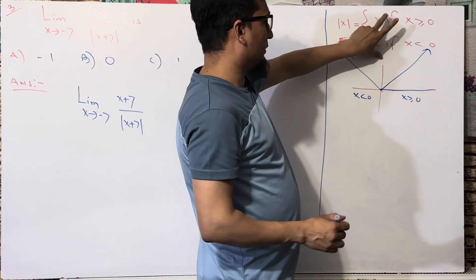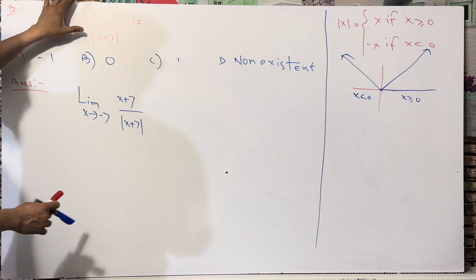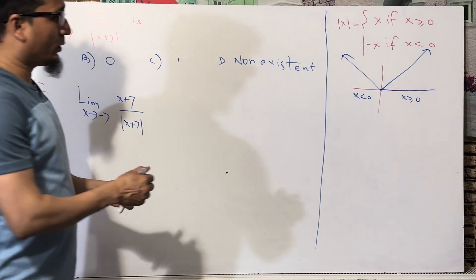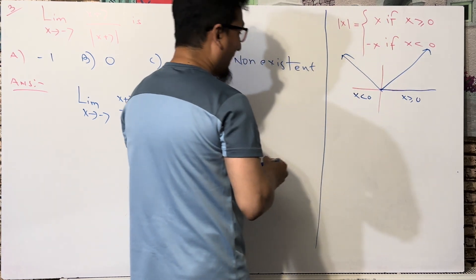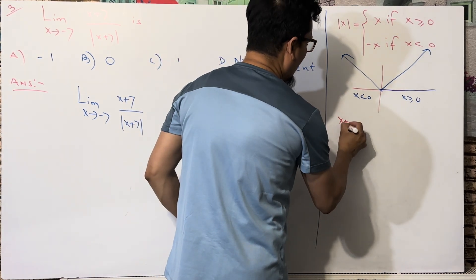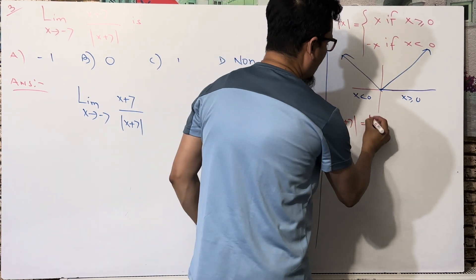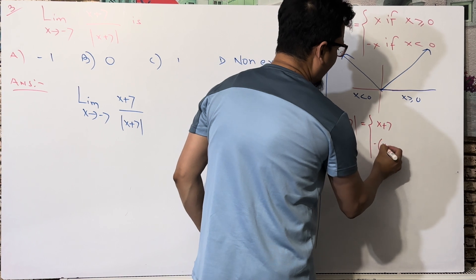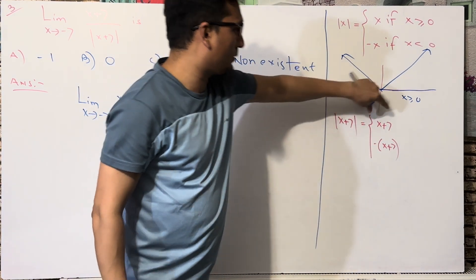Now we solve this question using the same concept. Here we have mod of (x + 7). Using this concept, mod of (x + 7) can be written as either (x + 7) or minus (x + 7) — we have just these two things, one the same and one opposite in nature.